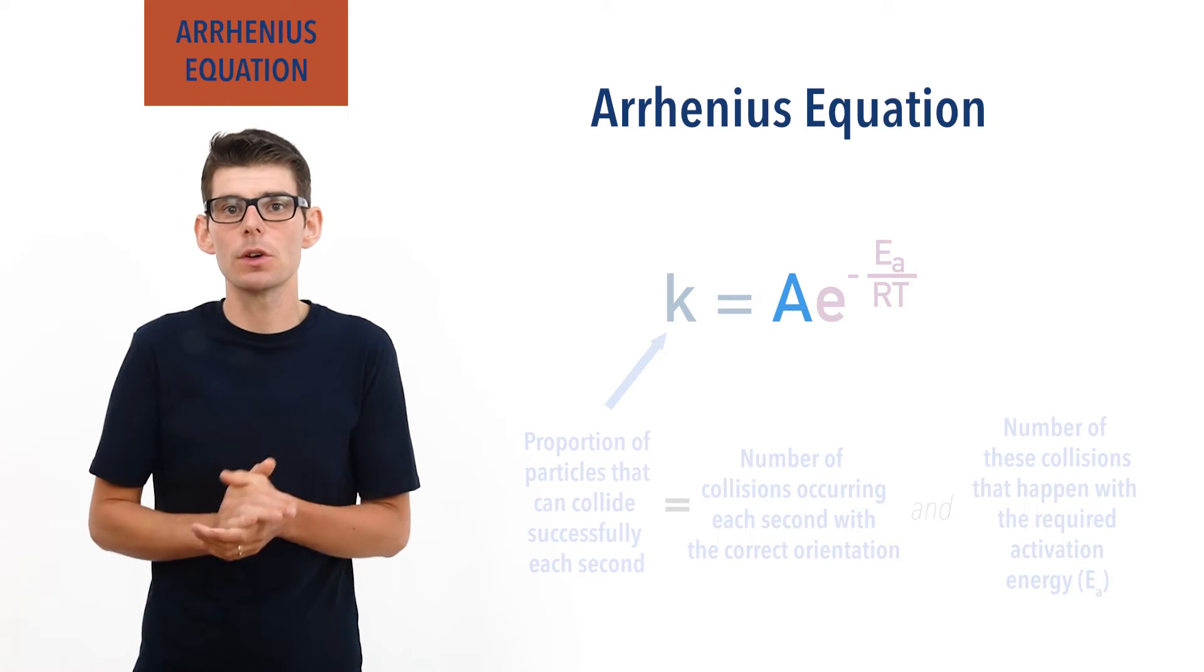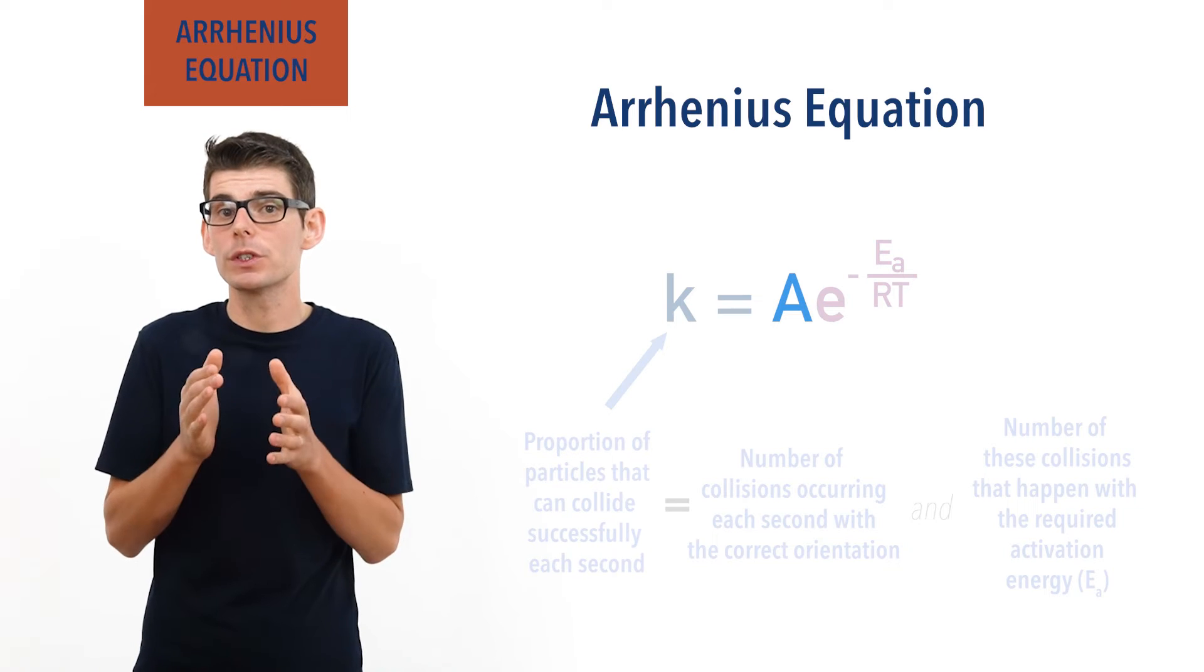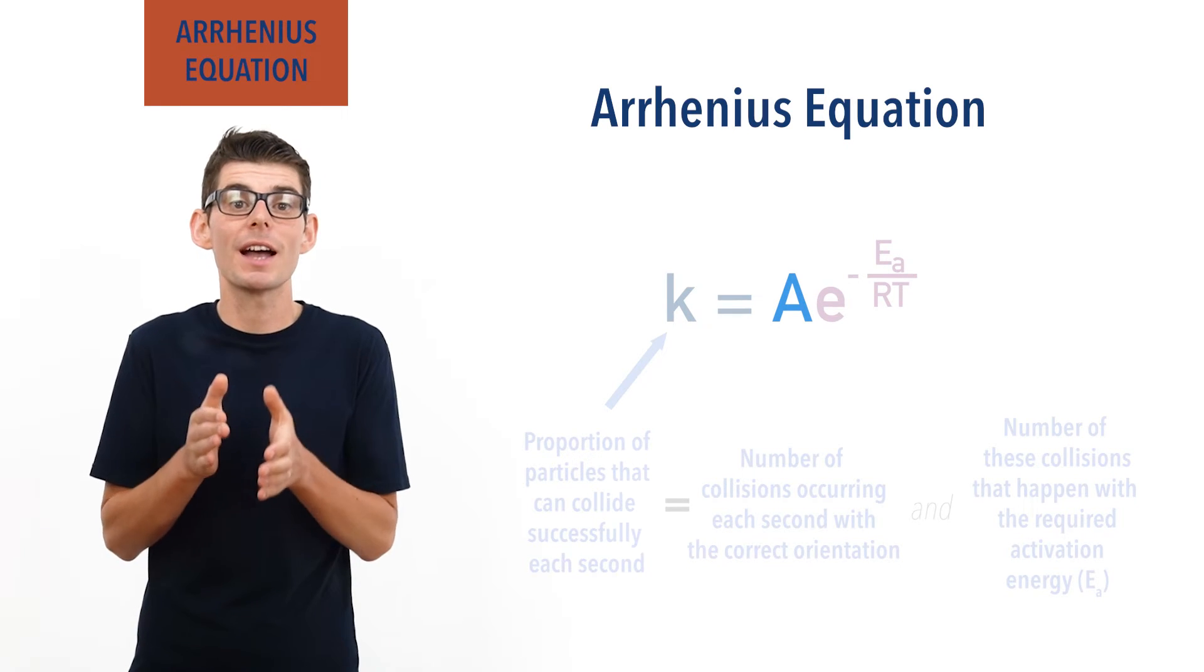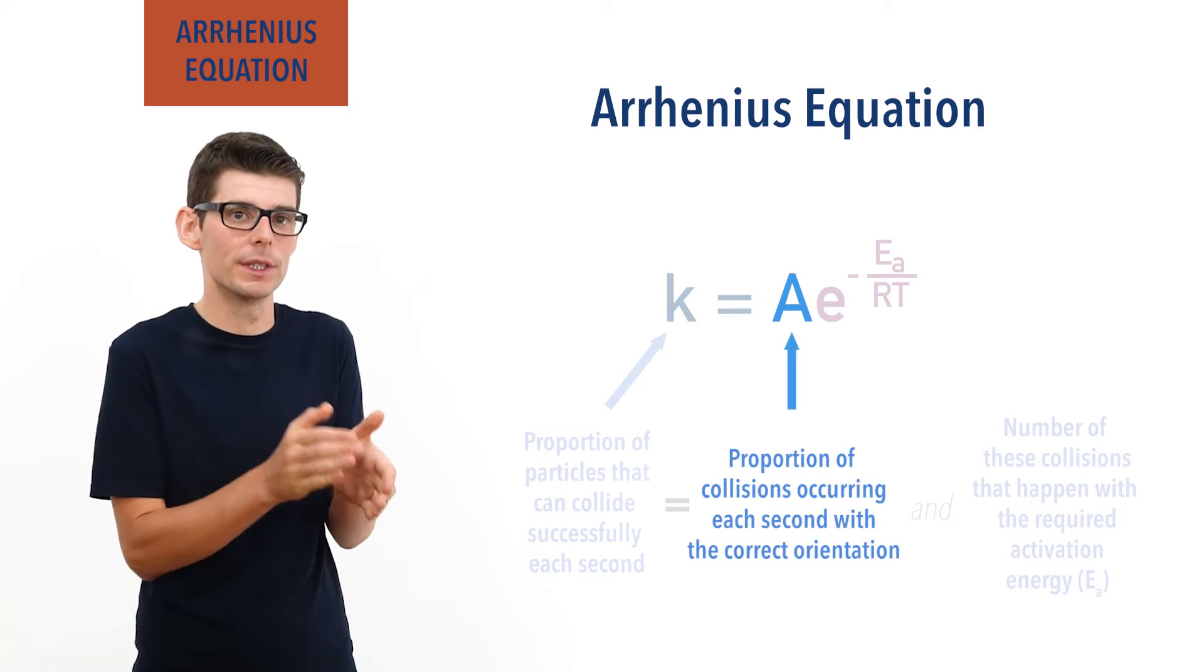The A part, the Arrhenius constant, is a value that describes the proportion of collisions between reactant particles that are happening each second with the correct orientation.